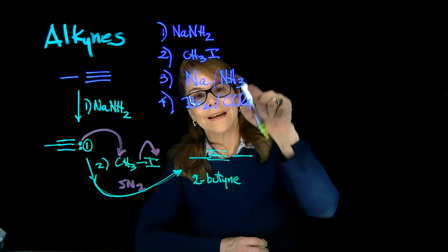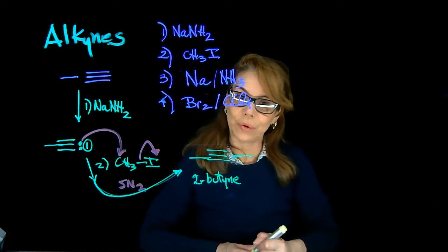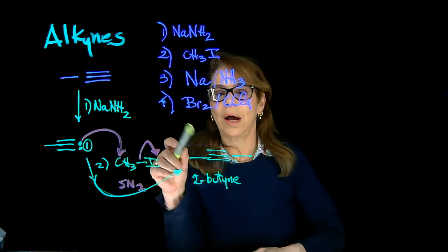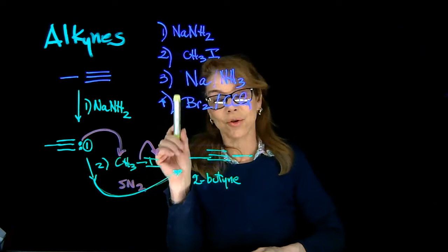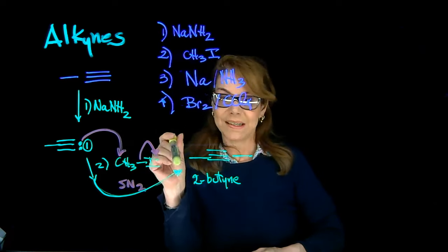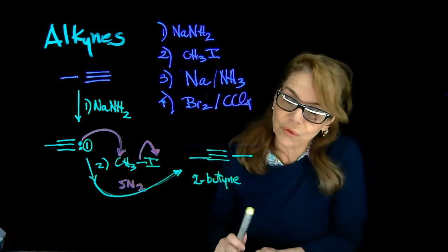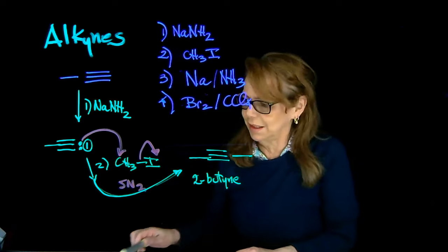So now what's next? This condition, sodium and ammonia, is used to hydrogenate partially an alkyne to make an alkene. But this time, this condition is used to make trans alkene.